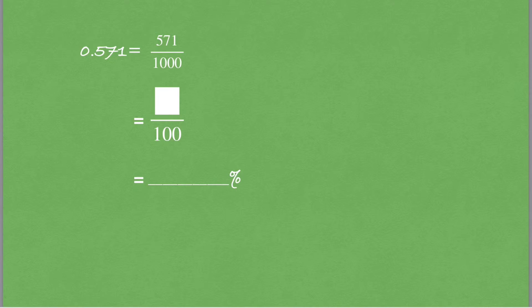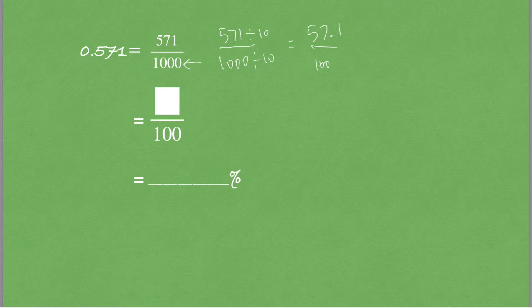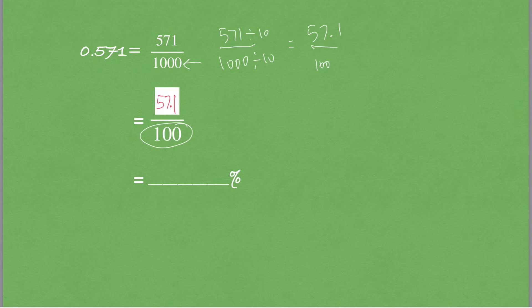As shown in the previous slide, 0.571 equals 571 out of 1000. To convert the denominator to 100, I divide both numerator and denominator by 10, giving 57.1 out of 100. Writing the numerator as it is with a percent sign, 0.571 equals 57.1%.